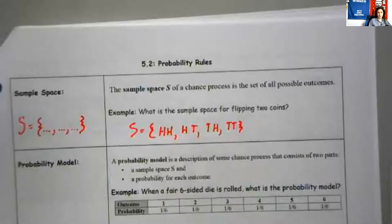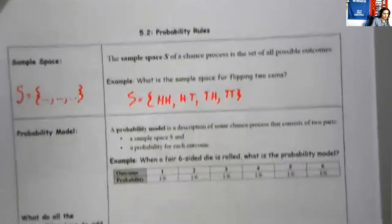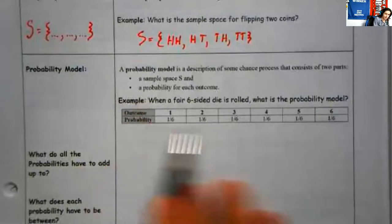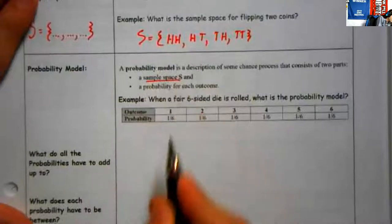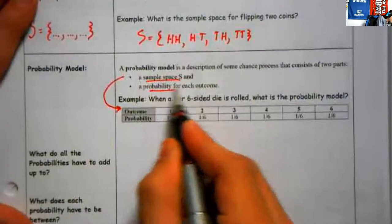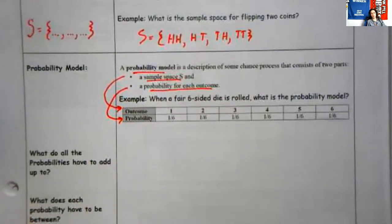So we have sample spaces — those are all the things that could happen. Sometimes we're going to represent those visually with Venn diagrams. We're often going to talk about probability models, like rolling dice. Rolling a die gives us a simple probability model, which gives us the sample space — all the possible outcomes — and a probability for each outcome. A probability model gives us those two things: the outcomes and the probability of each.